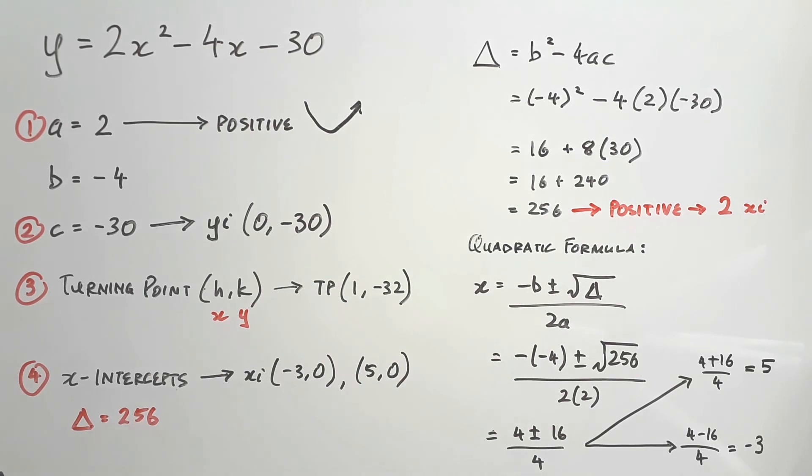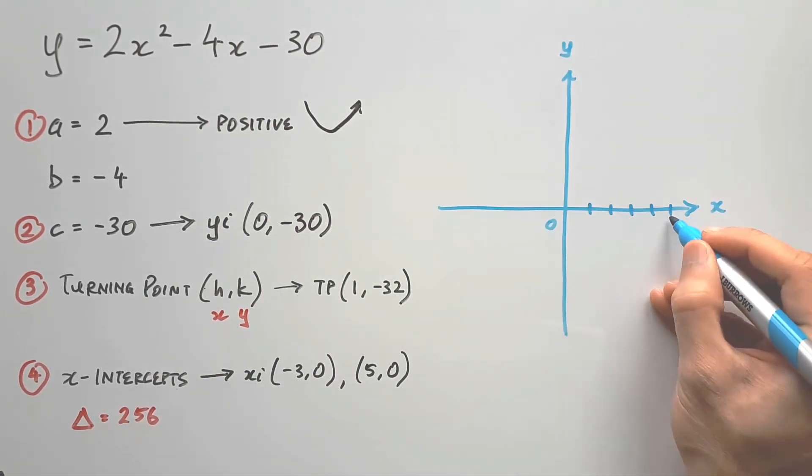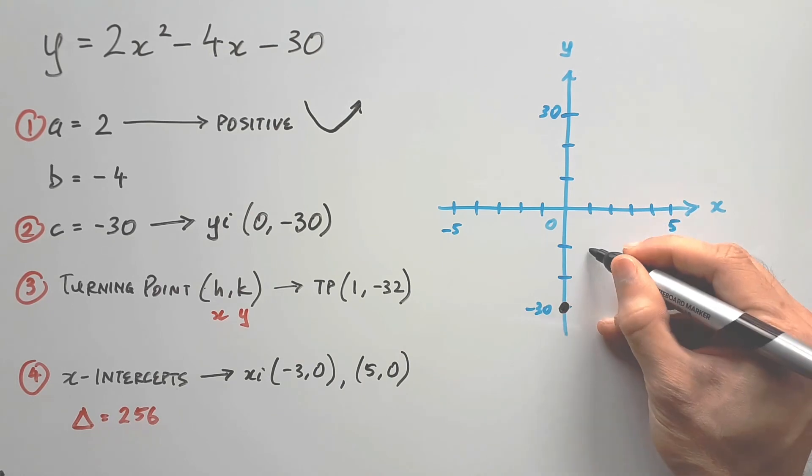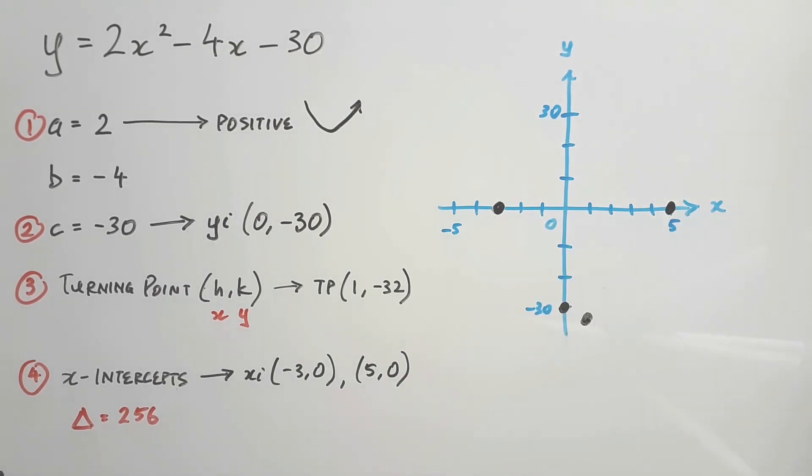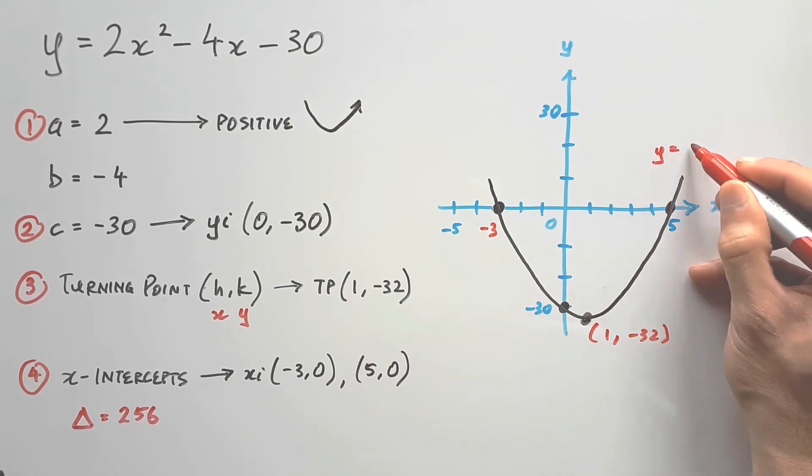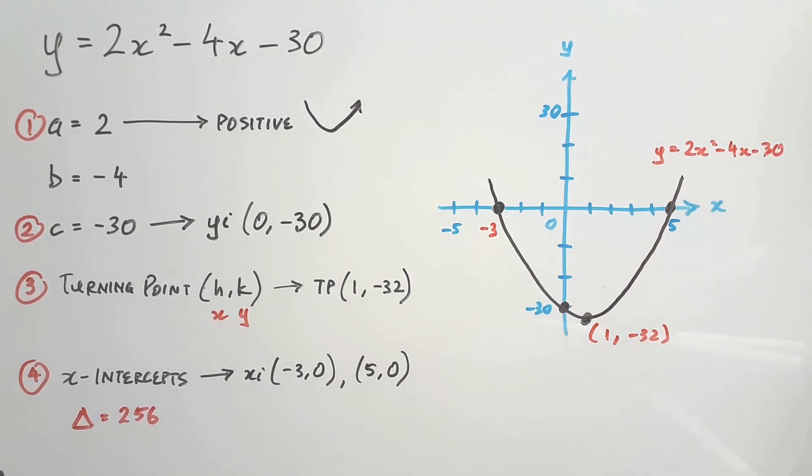The only thing left to do now is to put it all in the pot and see what comes up. Plot out all the points we found and draw a smiley face through. Remember to label the points and write the equation. And there we have it, a parabola using only the standard form.